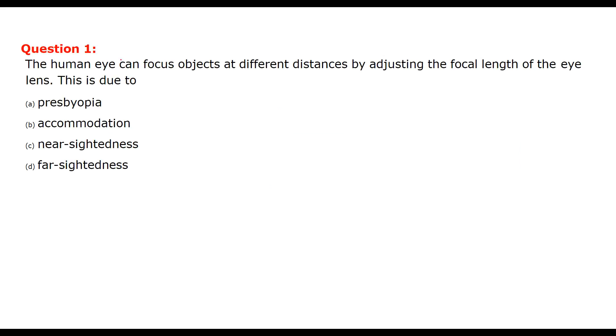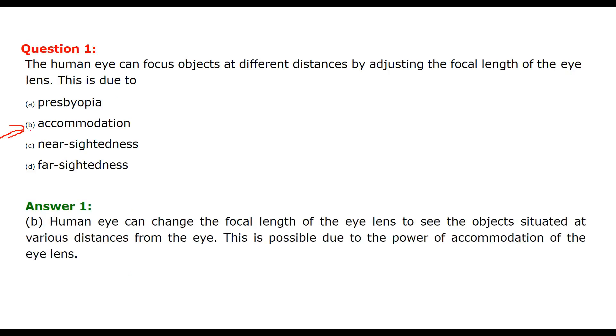Question and answer on human eye and colorful world. The first question is: the human eye can focus objects at different distances by adjusting the focal length of the eye lens, and this is due to accommodation. So we'll choose this option.